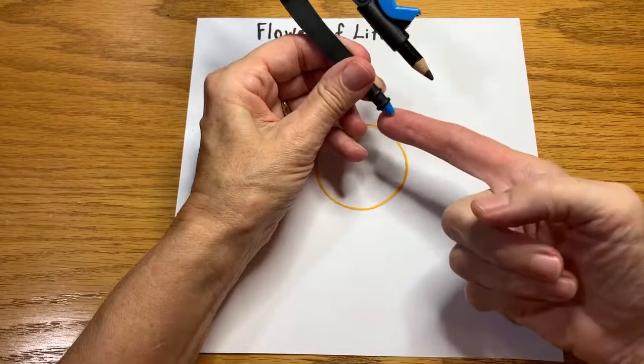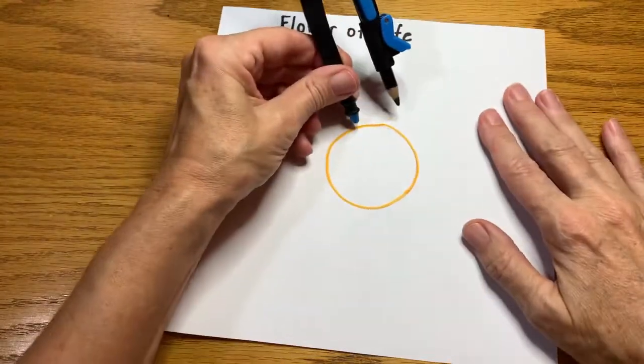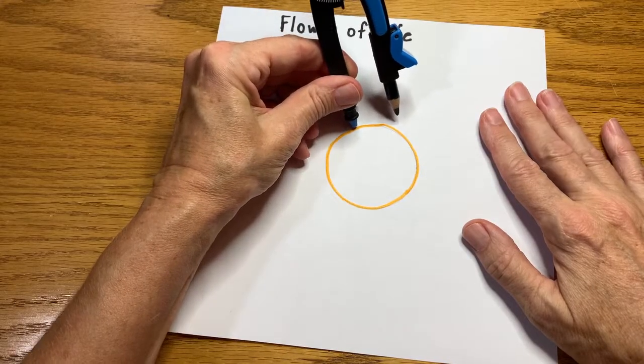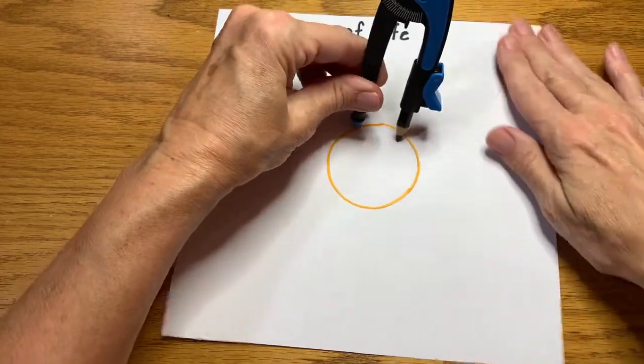I am now going to place the point, not the pencil side, the other side on the circumference of that original circle. It doesn't matter where or anywhere and make another circle.